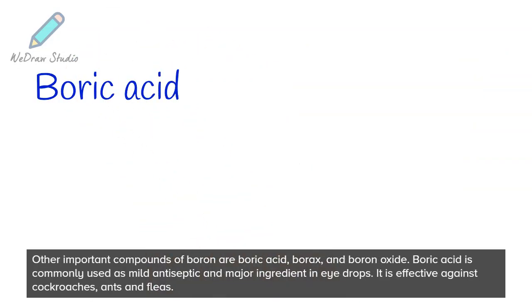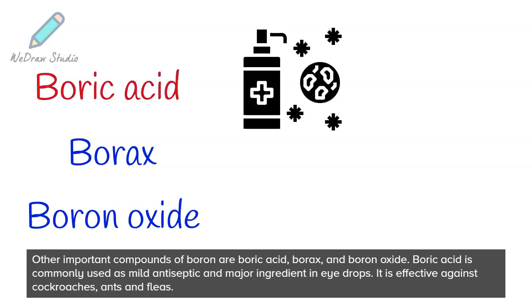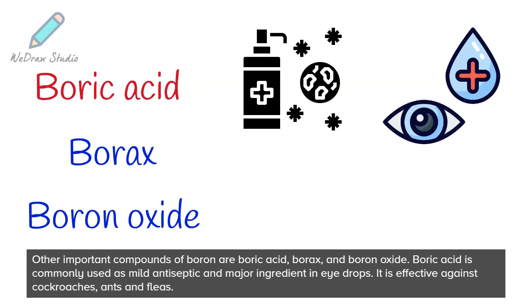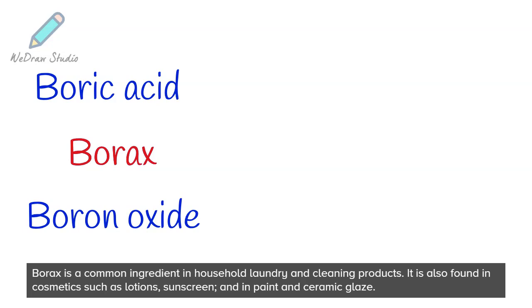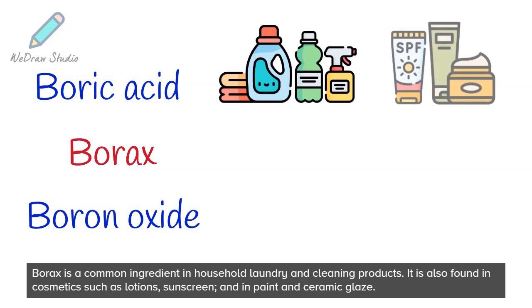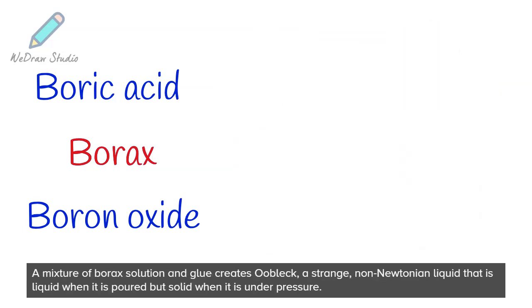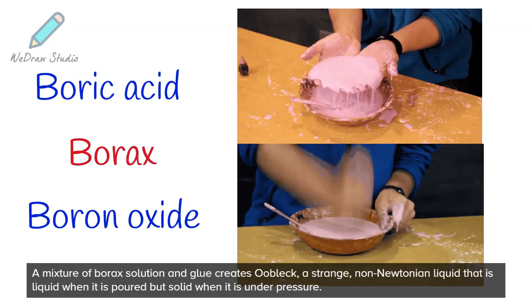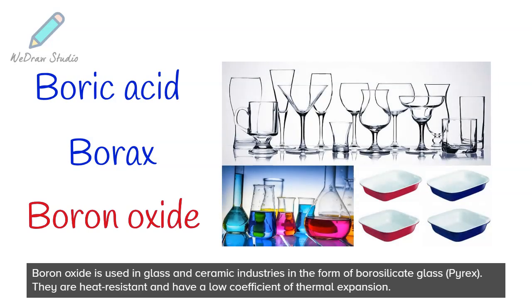Other important compounds of boron are boric acid, borax, and boron oxide. Boric acid is commonly used as a mild antiseptic and a major ingredient in eye drops, and is effective against cockroaches, ants, and fleas. Borax is a common ingredient in household laundry and cleaning products, and is also found in cosmetics such as lotions and sunscreen, as well as in paint and ceramic glaze. A mixture of borax solution and glue creates Oobleck — a non-Newtonian liquid that is liquid when poured but solid when under pressure.